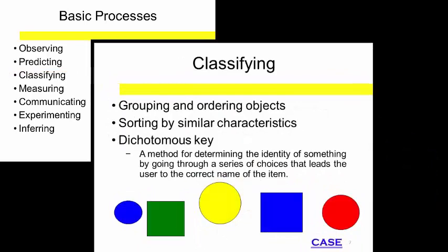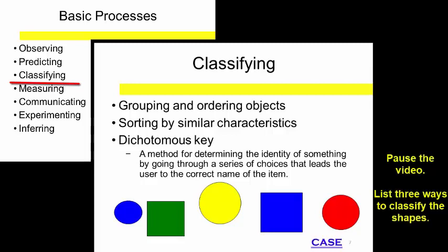Scientists use observations to classify objects into similar groups. Pause the video while you think of at least three ways to classify or sort these objects into groups. Record the three classifications in your notes. Resume the video when you have finished.